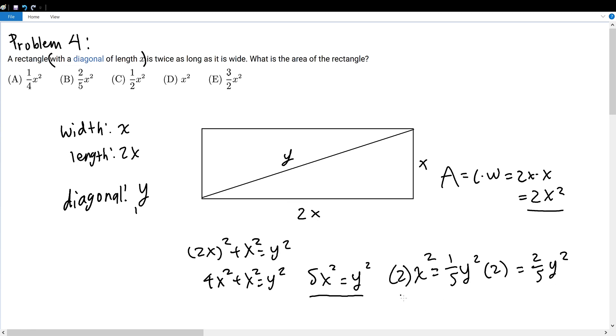Therefore, since the area of this rectangle is equal to 2/5 of the diagonal squared, we can say for sure that the answer is B. Remember, y stands for the diagonal, and we're trying to find the area of the rectangle in terms of this rectangle's diagonal. So indeed, our answer is 2/5 x², answer B.